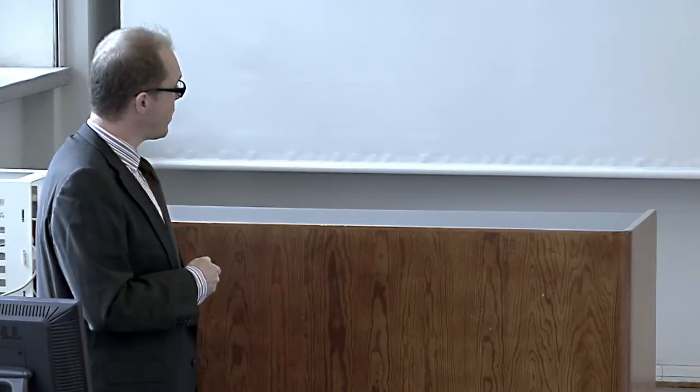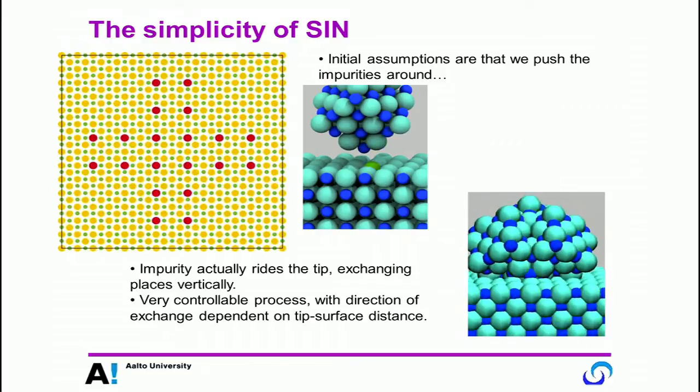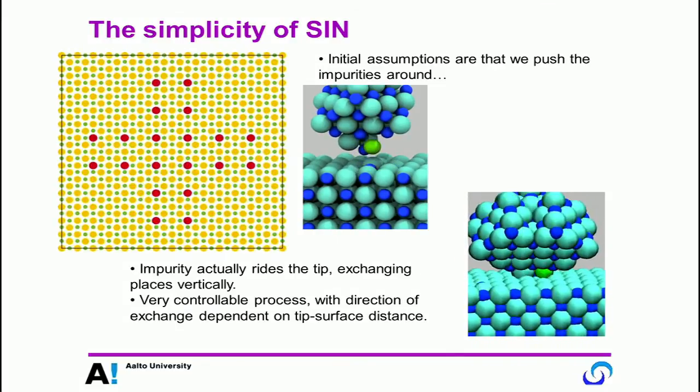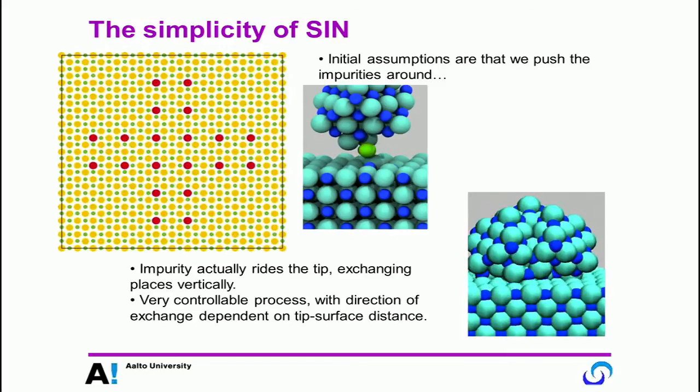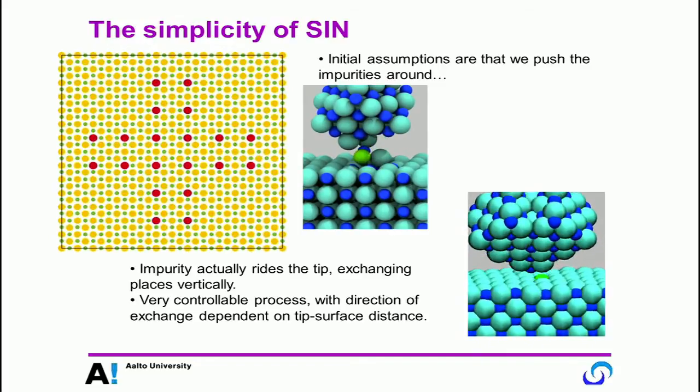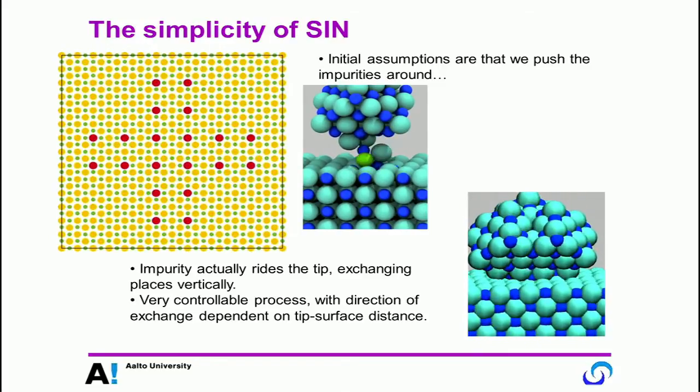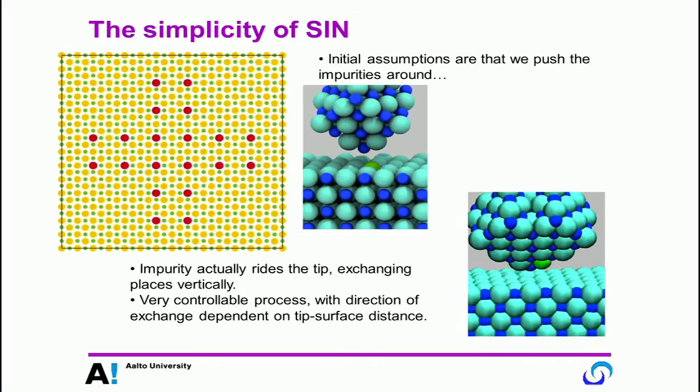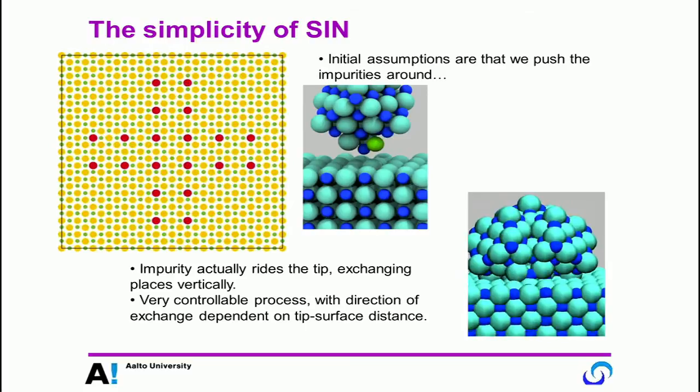And so then we know we can pick up the species from the surface. Can we put it back down? So here we ran a room temperature simulation. And we found if we go very, very close to the surface, we can, in fact, deposit this impurity back into the sample. So, in fact, this manipulation is not pushing atoms around on the surface. It is picking them up, moving the tip away, and putting them back down. And because of this difference in relative height, it's completely controllable and reproducible. So you can build any types of structures you wish.